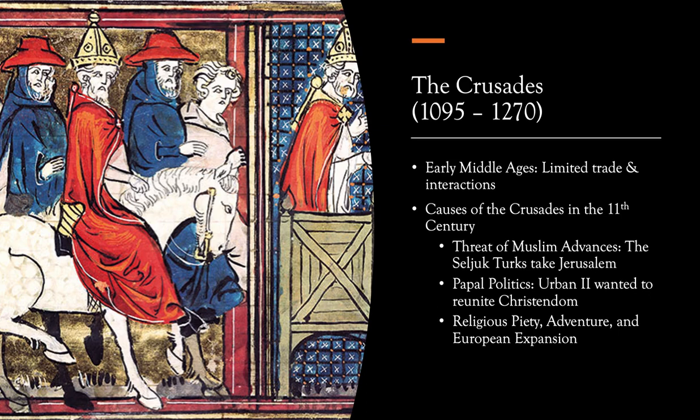The Church recruited participants from all across Western Europe using a propaganda campaign. Urban II himself toured France and preached at cathedrals and churches about the need for Christians to come together and reclaim the Holy Land from the evil Muslims, using a lot of propaganda and making a big villain of the Muslims. But also, of course, he was promising all of these spiritual benefits, which to medieval Europeans was really the most attractive part.